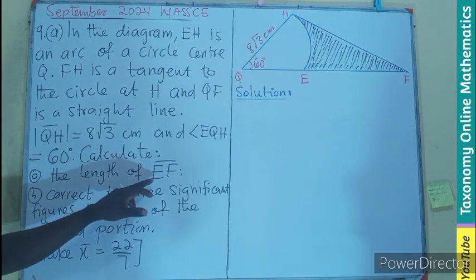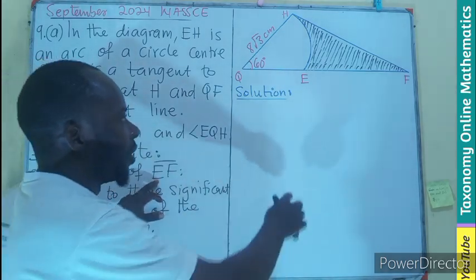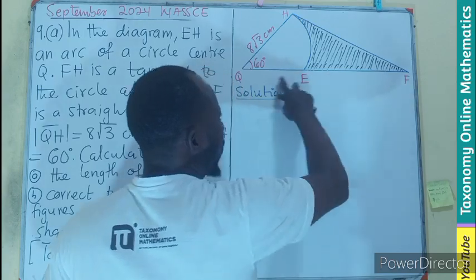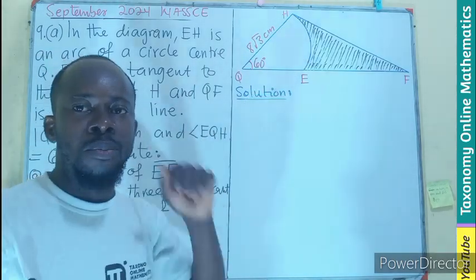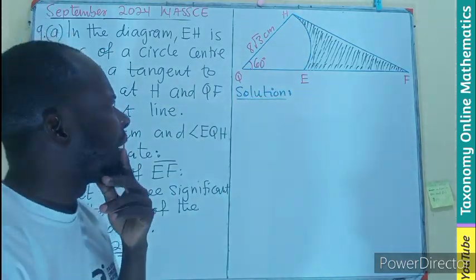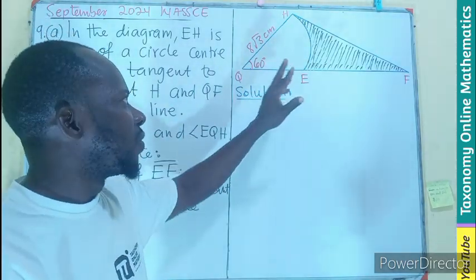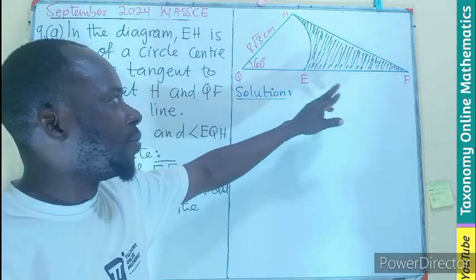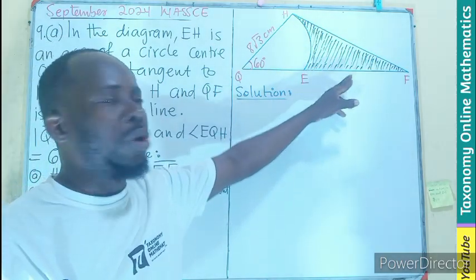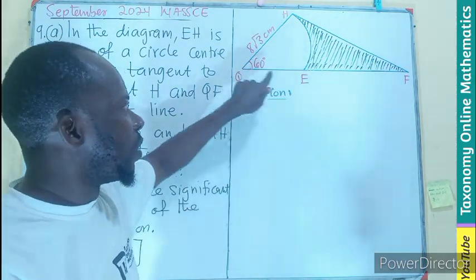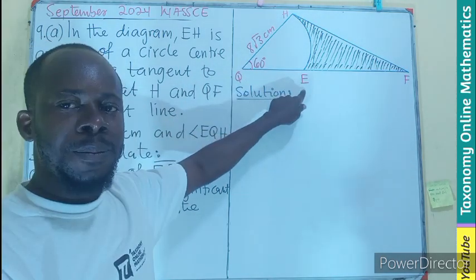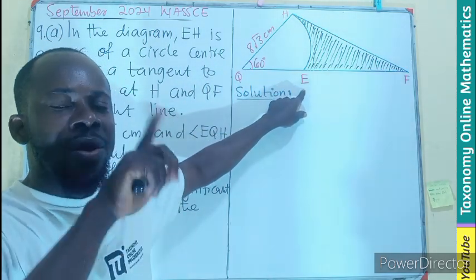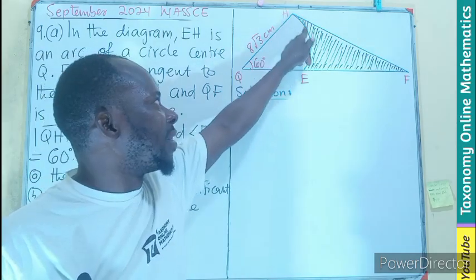The angle EQH is given as 60 degrees. Our task is to find EF, this small portion of the straight line, and then we have to find the area of the shaded portion. That means we are only finding some portion of the straight line which is extended from Q.